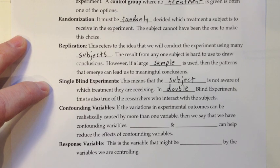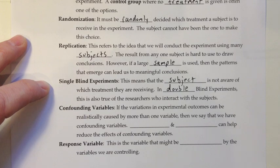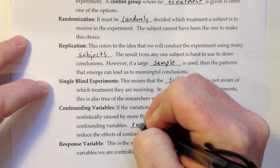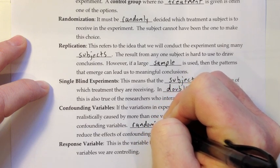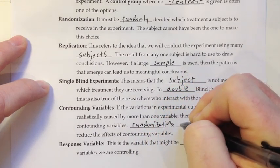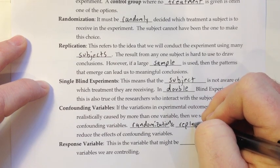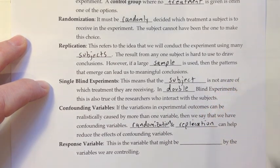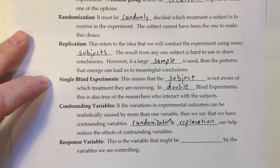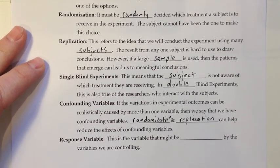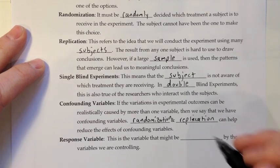Mainly, we're doing all of this work to try and avoid the effects of confounding variables. If the variation in an experimental outcome can be realistically caused by more than one variable, then we say we have confounding variables. Randomization and replication can help reduce the effects of confounding variables. The response variable is the variable that might be affected by the variables we are controlling.